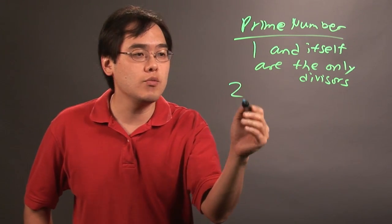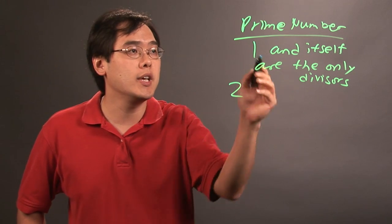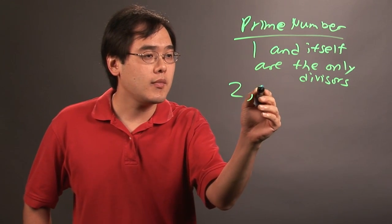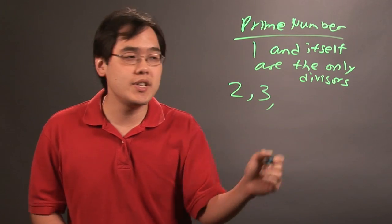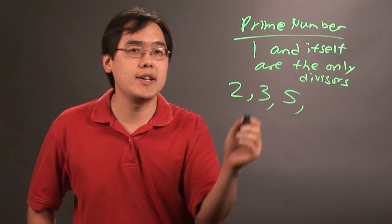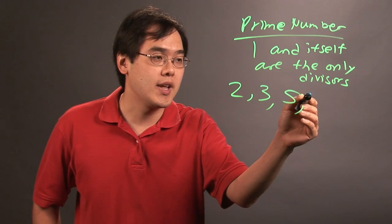But if you have two, two is a prime number because the only divisors are one and itself, as well as three. Now four is not, five is, and then six has divisors two and three so that's not prime.